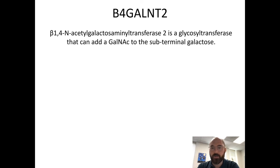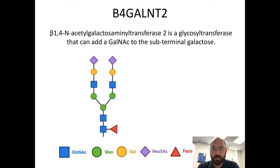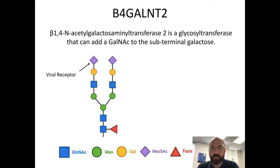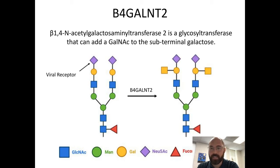So what is B4GALNT2 and what does it do? It's a glycosyltransferase, which adds sugars to a glycan. Glycans are chains of sugars added to the top of glycoproteins as they go through the secretory pathway. With respect to flu infection, the key sugar is the sialic acid moiety — the viral receptor. What B4GALNT2 does is take sialic acid-containing glycans and add a GalNAc to the subterminal galactose, so that the sialic acid now has a neighbor. But the sialic acid is still there — so why can't the virus use it as a receptor?